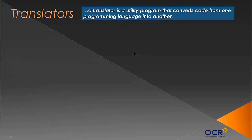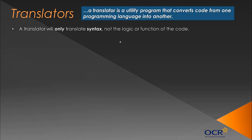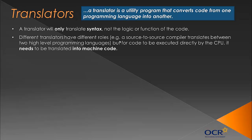A translator is a utility program — we looked at this in our software video — that converts code from one programming language into another. It's important to realise that a translator will only translate the syntax and rules, not the logic or function of the code. Different programming languages like Java, C++, and Python have different syntaxes, but their logic is very similar. If you translated code from Python to Java it should still do the same thing, although the actual way it's done would be slightly different.